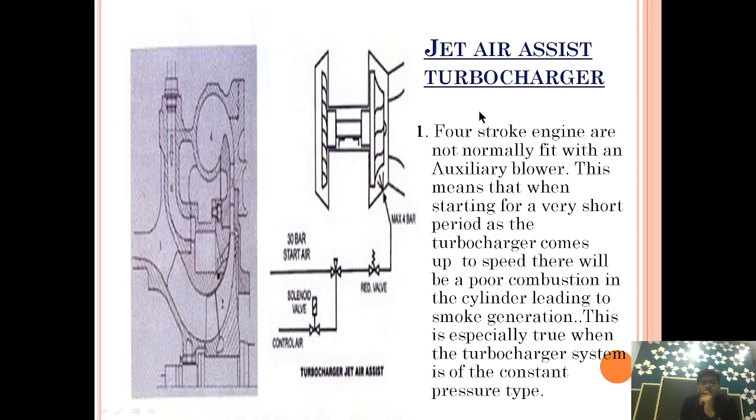Jet air assist turbocharging systems are used in 4-stroke engines. 4-stroke engines are normally fitted with an auxiliary blower. In the case of main engines, when the engine is building up RPM and the turbocharger has not reached optimum RPM, it is compensated by an auxiliary blower. However, that is not the case for 4-stroke engines.